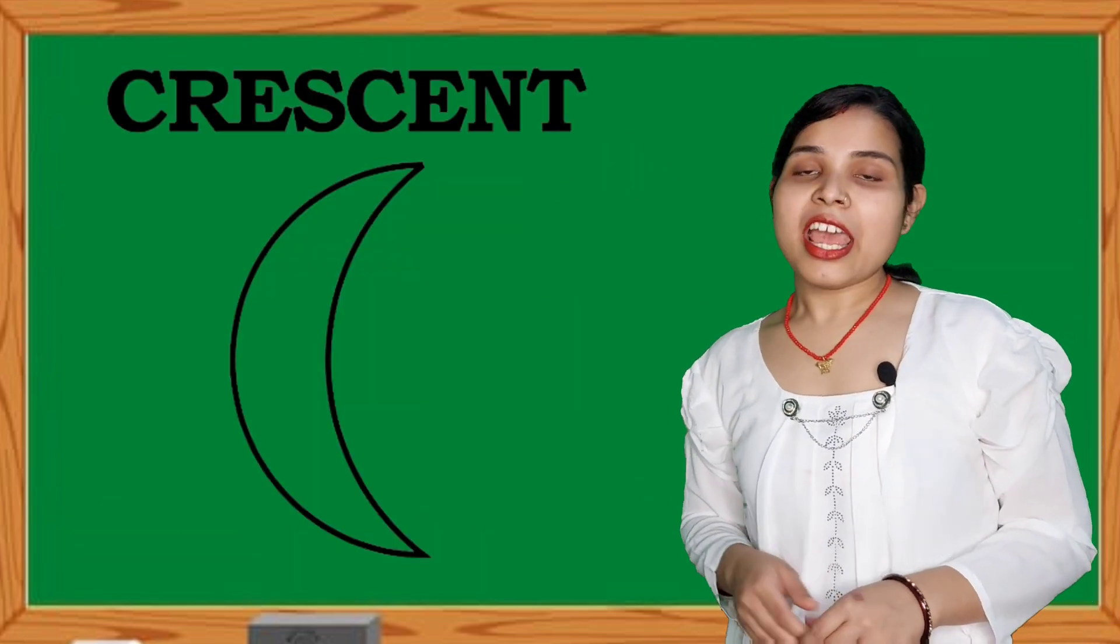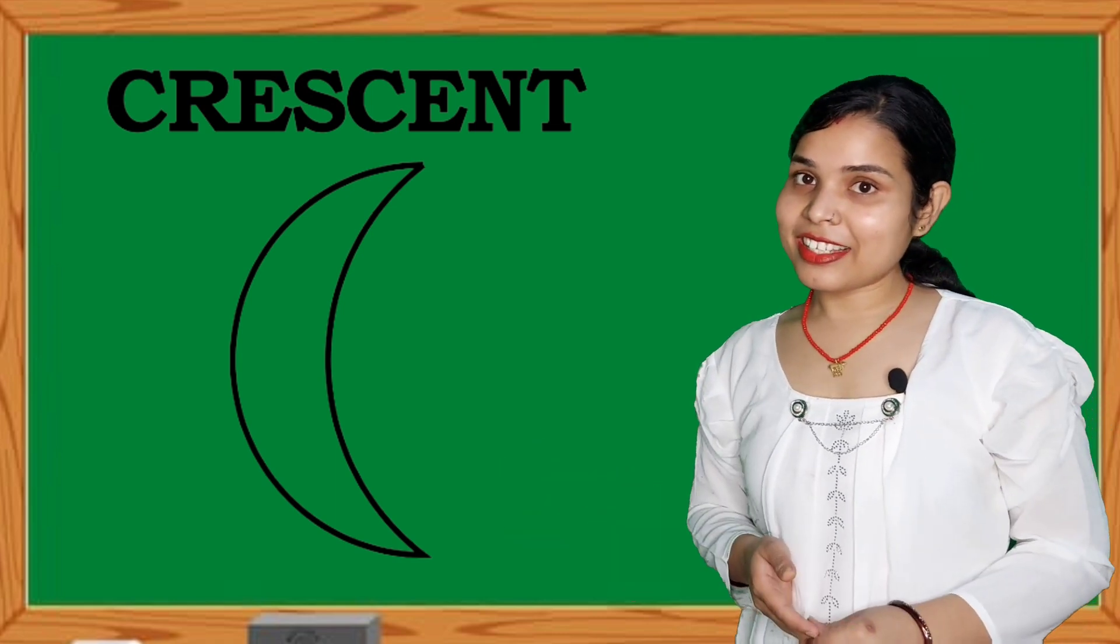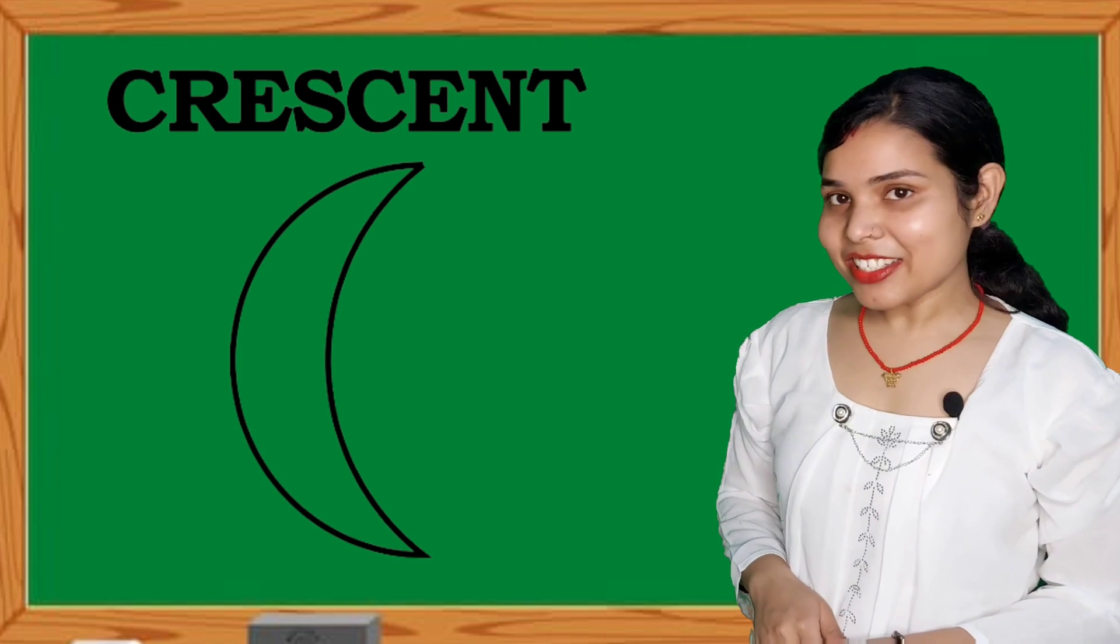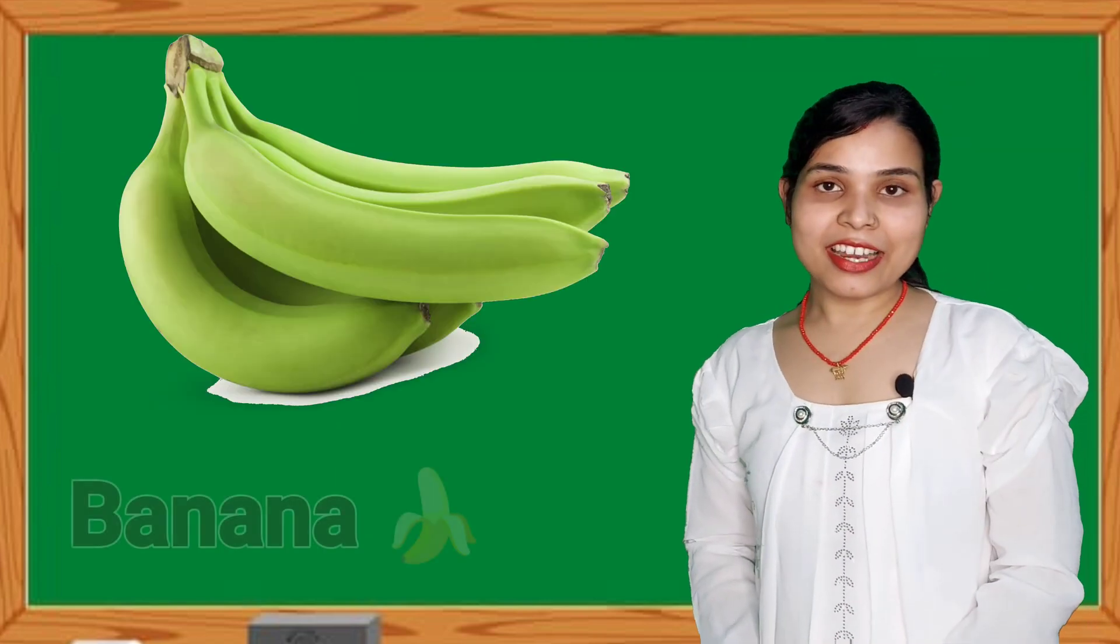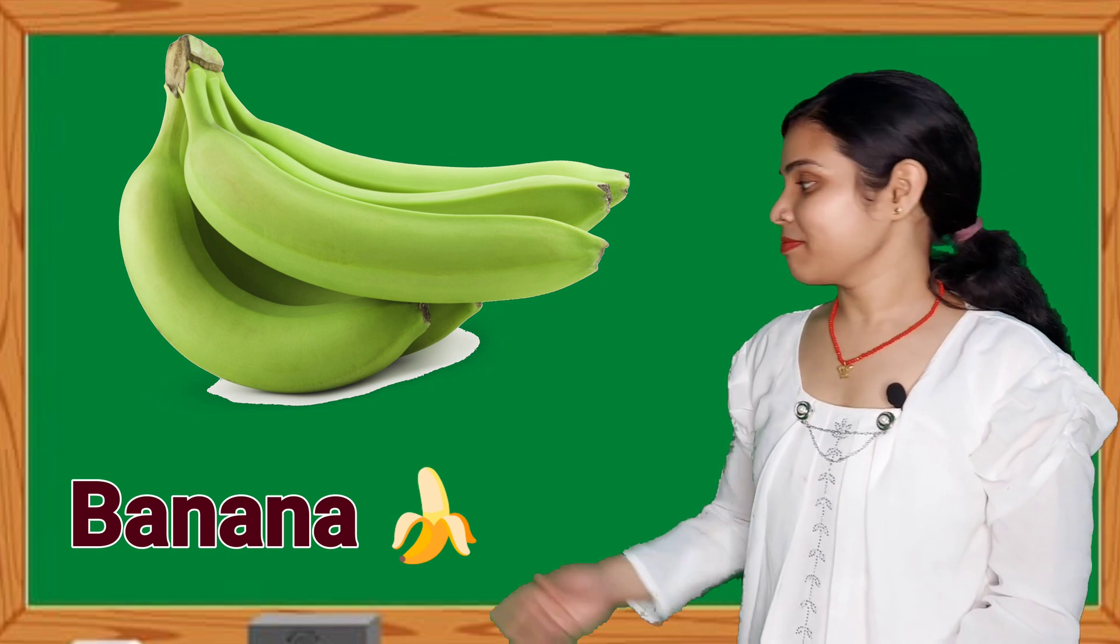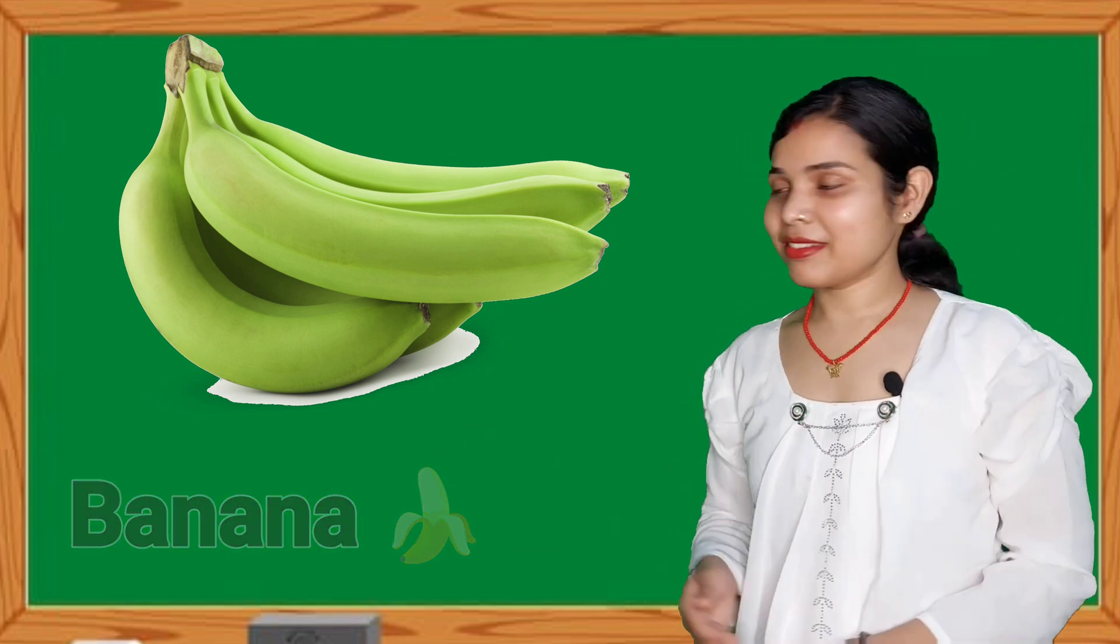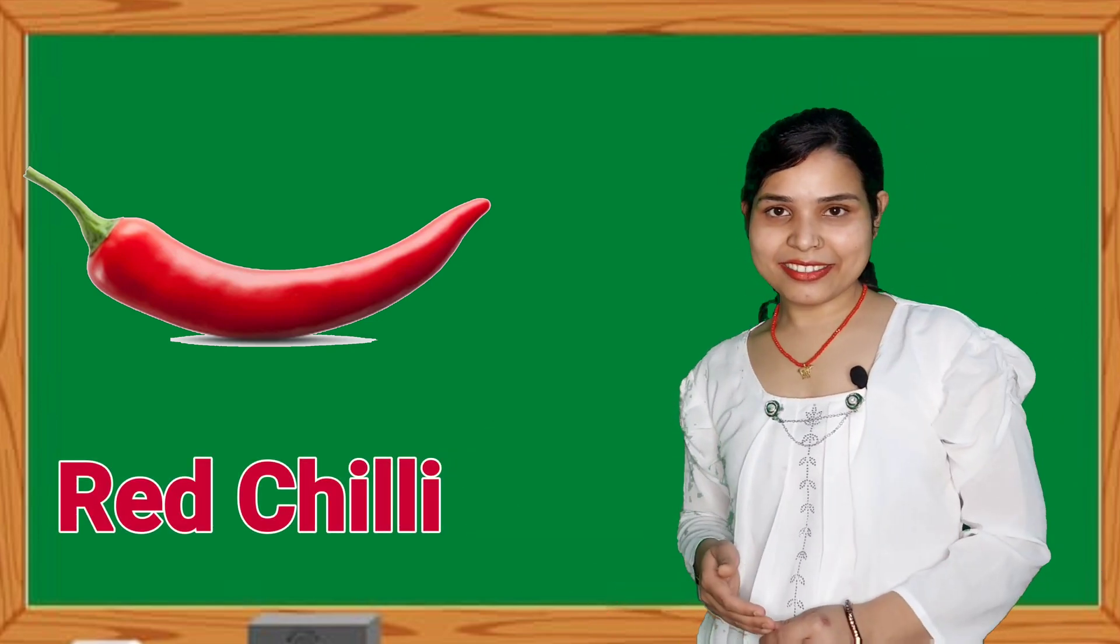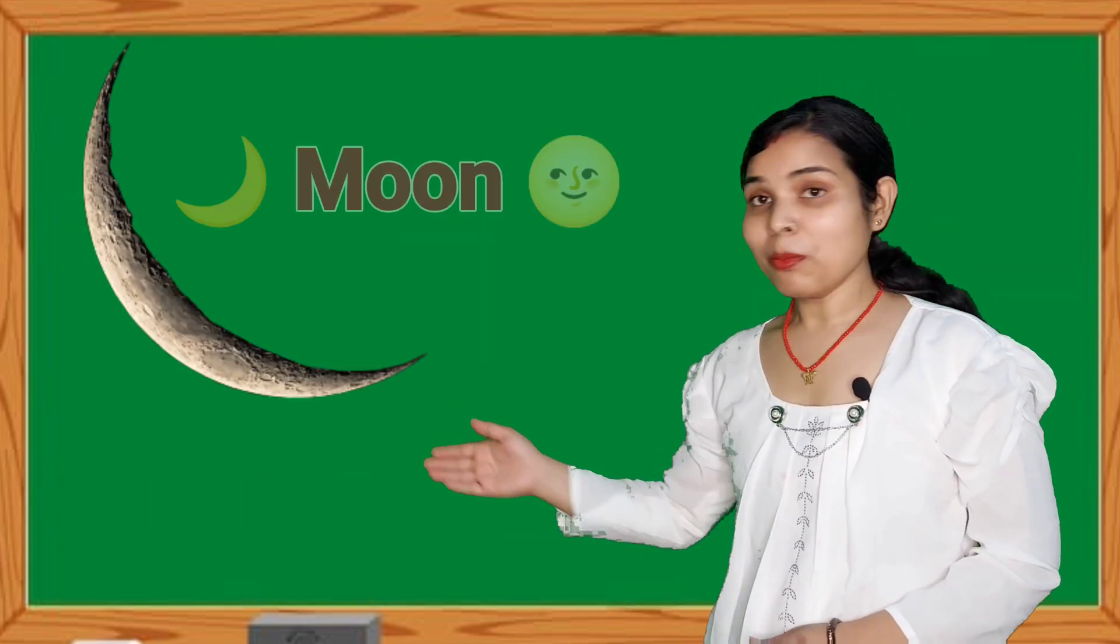Children, and now next shape is crescent shape. Children, the shape of crescent like banana, brinjal, red chili and moon.